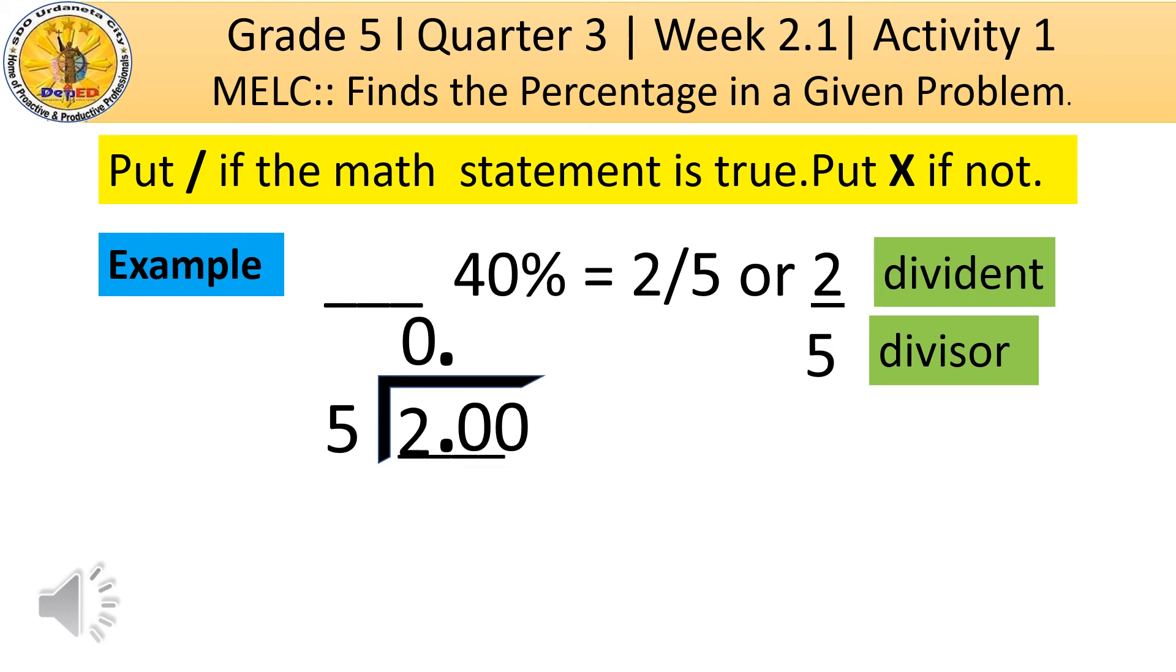So, 20 divided by 5 is 4. Then, let us multiply 4 times 5 is 20. Then, subtract. We get 0. Then, bring down 0.